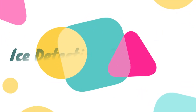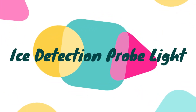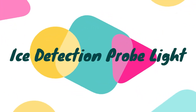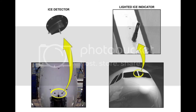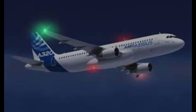Ice detection probe light: some aircraft are fitted with a visual ice detection probe which is normally mounted between the windshields. In some installations, the probe is internally or externally lit to enable the pilots to see any ice accumulation occurring during hours of darkness.